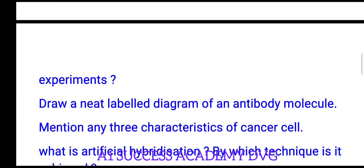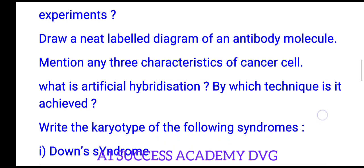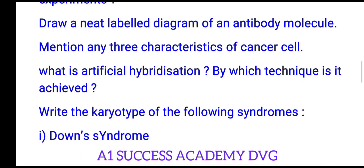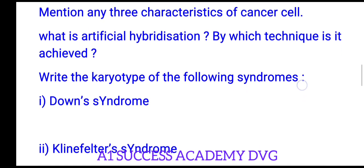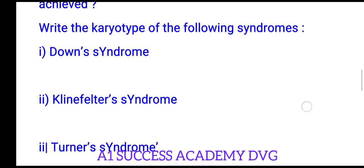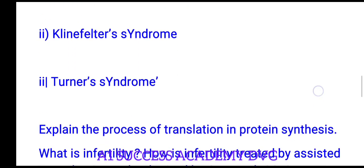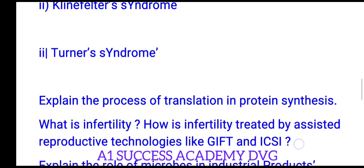Draw a diagram of an antibody molecule. Mention three characteristics of cancer cells. What is artificial hybridization technique and how is it achieved? Explain chromosomal disorders: Down syndrome, Klinefelter syndrome, and Turner syndrome.